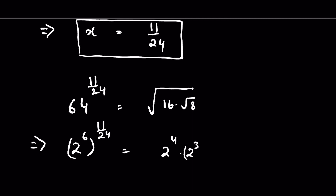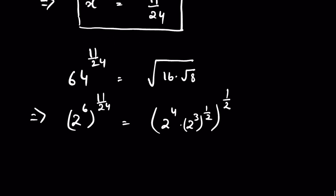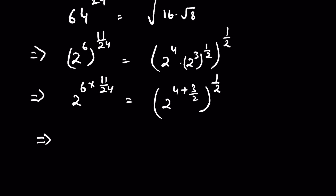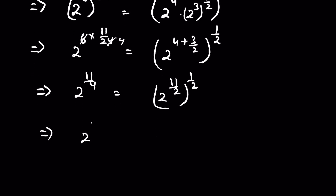The square root gives power 1 upon 2, and then the whole is raised to the power 1 upon 2. So 2 raised to the power 6 times 11 upon 24 equals 2 raised to the power 4 plus 3 upon 2, whole raised to the power 1 upon 2. This simplifies to 2 raised to the power 11 upon 4 equals 2 raised to the power 11 upon 4. LHS equals RHS, hence our answer is verified.